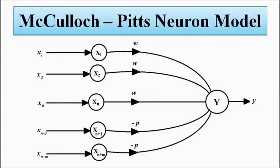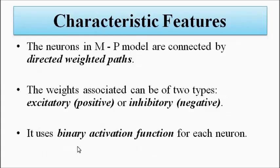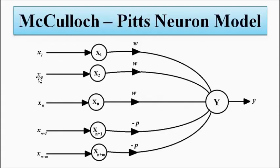Depending on the requirement, what type of function we want to implement or what specific purpose this MP neuron has to carry out, the weights associated can be excitatory or inhibitory.